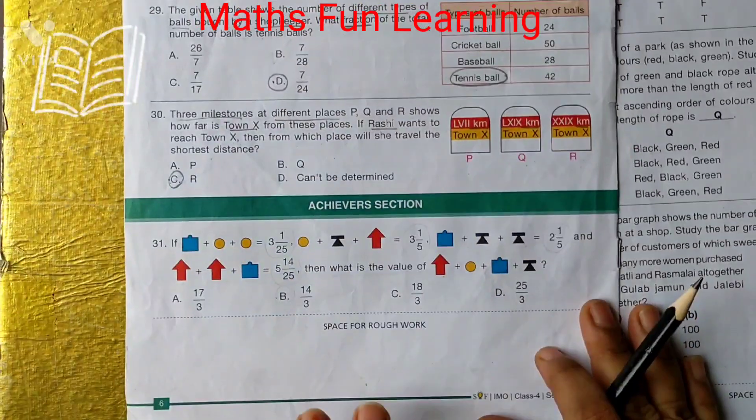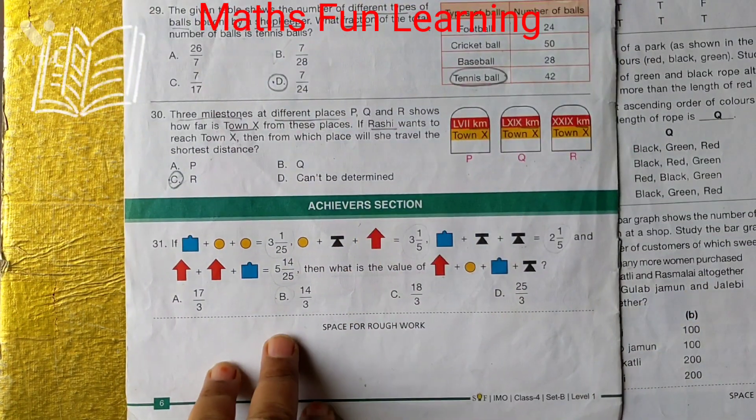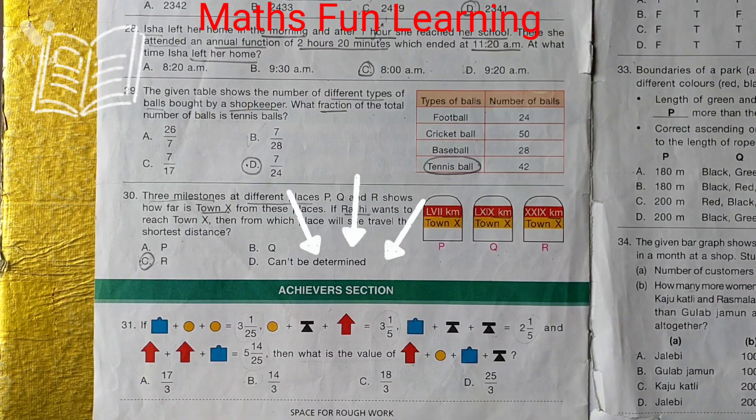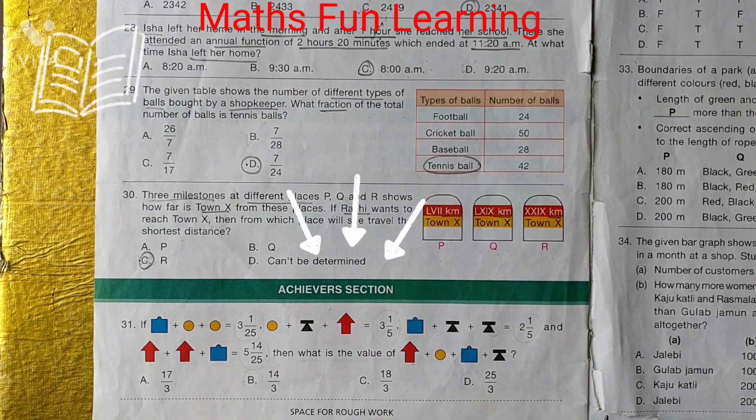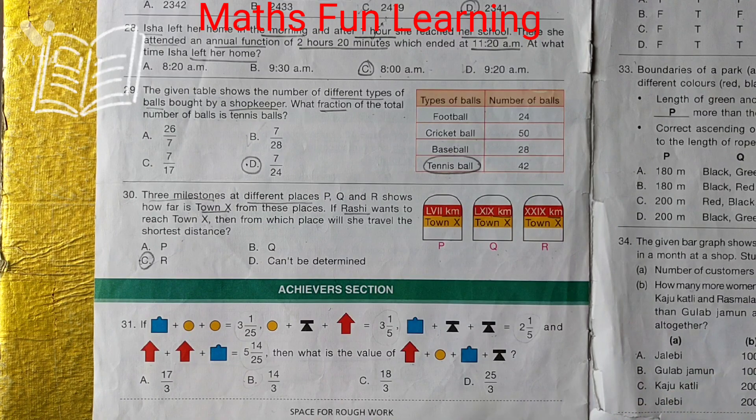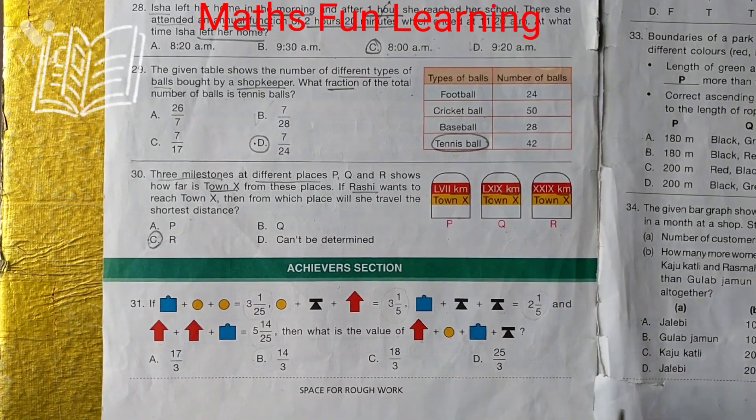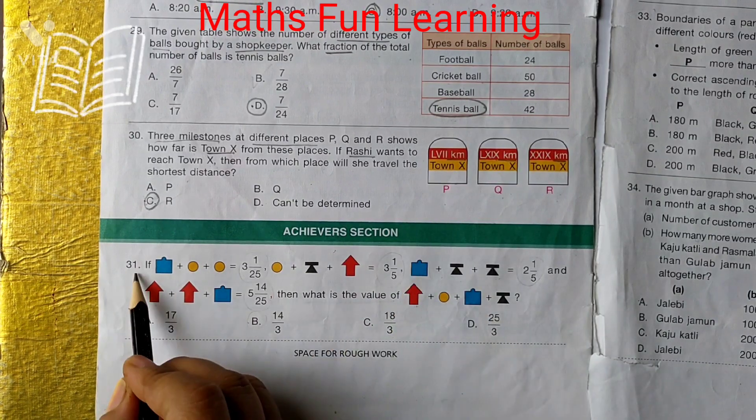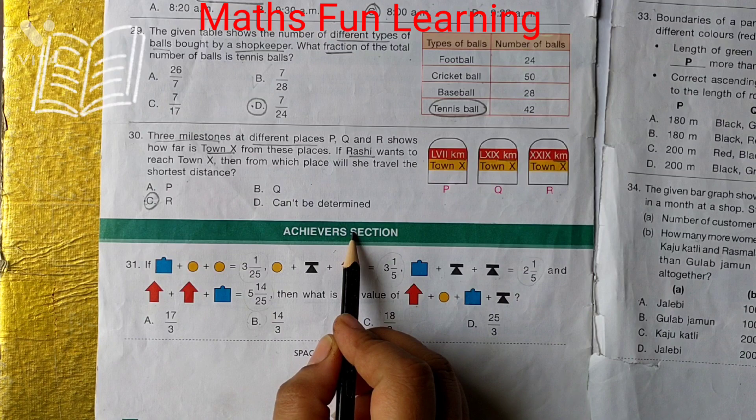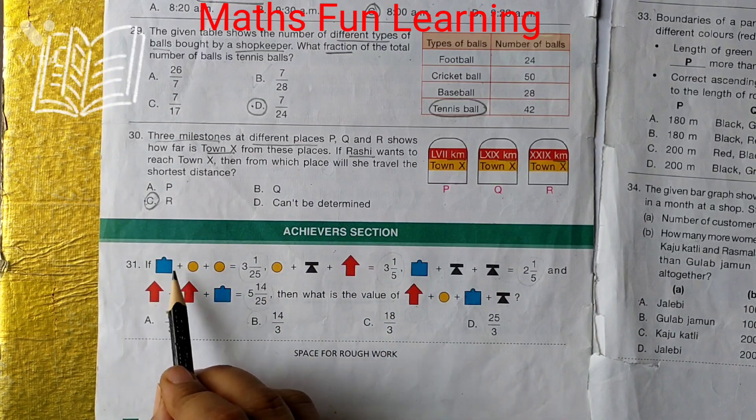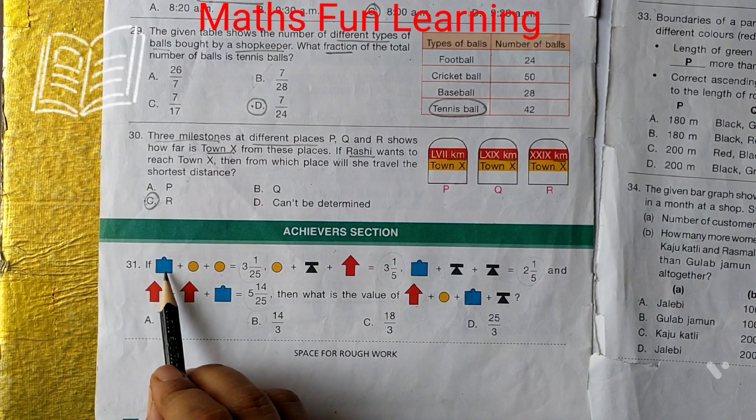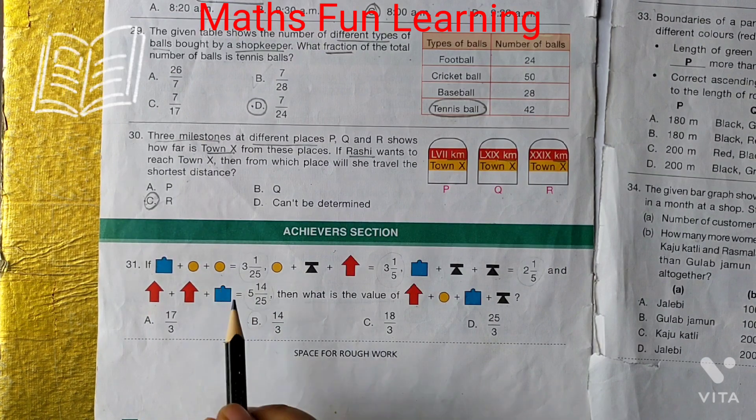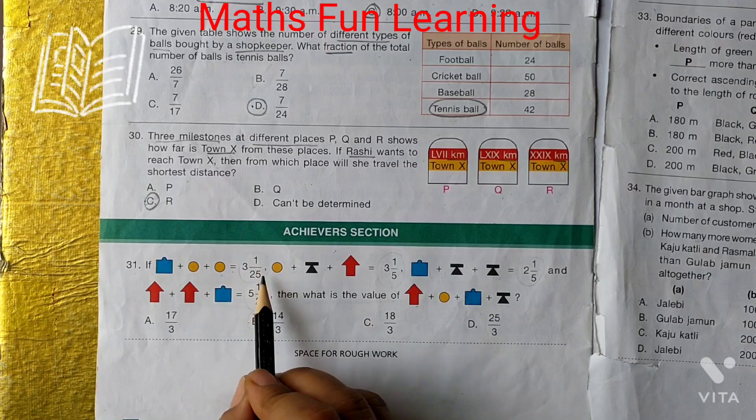Here, achiever section questions are here. And these questions, basically why it is important, because in one question only they give many parts. So you have to know each and every part. This is my first question, 31. Achiever section. If there are the shapes given, I will just name the colors. Blue plus yellow plus yellow which is equal to 3 and 1 by 25.